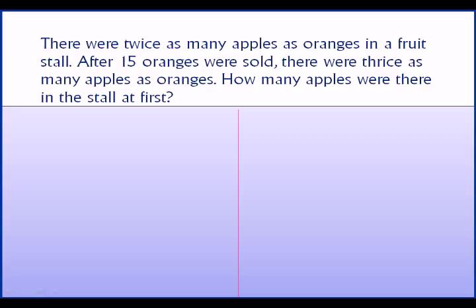There were twice as many apples as oranges in a fruit stall. After 15 oranges were sold, there were thrice as many apples as oranges. How many apples were there in the stall at first?